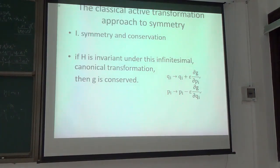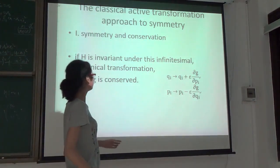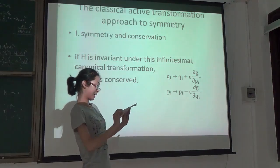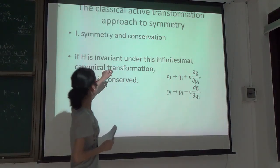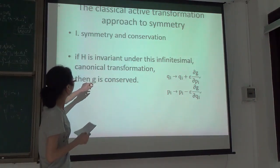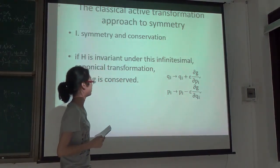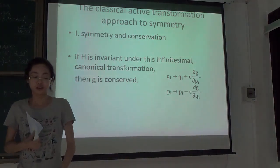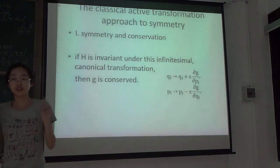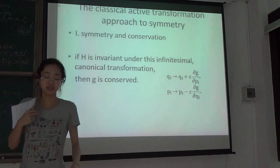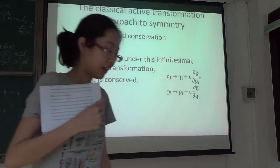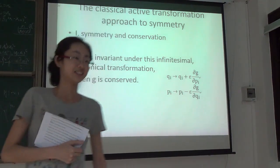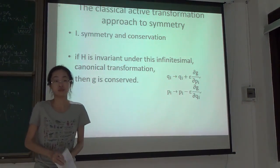The first theorem I am going to prove is this. Consider this infinitesimal canonical transformation. If the Hamiltonian is invariant under this transformation, then we say the generator G of this function is conserved. So for example, if I am the particle and I am staying here, and someone performed an active rotation on me, so I am pushed to this angle. And surprisingly, I find out that my energy is the same as before. So I will conclude that my angular momentum is conserved.